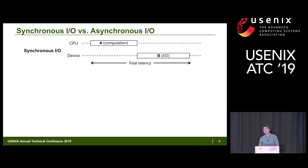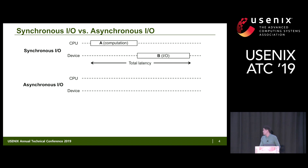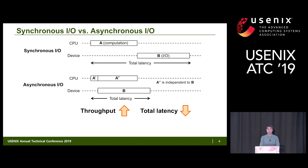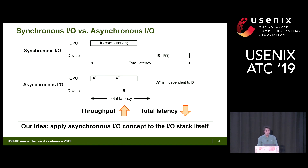In a computer system, when we need to run two operations — one computation and one I/O — a typical intuitive way is to run both synchronously. However, if the two operations have some independent parts, we can apply the asynchronous I/O technique. After performing dependent computation parts, we can run the I/O and independent computation at the same time, utilizing both the I/O device and CPU. Consequently, we can improve throughput and reduce total latency.